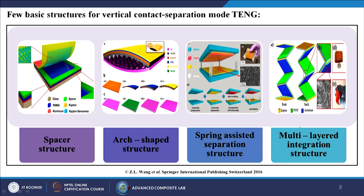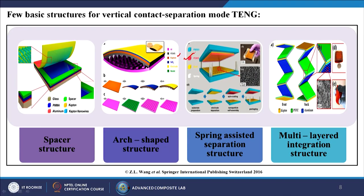There are different types of basic structures for the vertical contact-separation mode. In one case, glass is the substrate, then PMMA is placed on top, and then certain spacers are used with Kapton — simply contacting Kapton and PMMA generates electricity. In another case, PDMS and a gold particle layer are used. There is also the arc-shaped structure, where you press from both sides to make contact. Another structure is like a book page — simply take out the page and let it return to its original position.